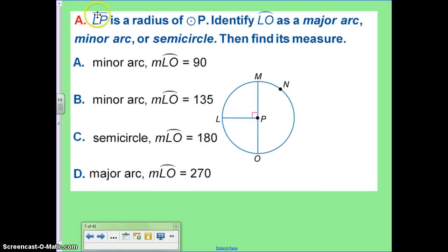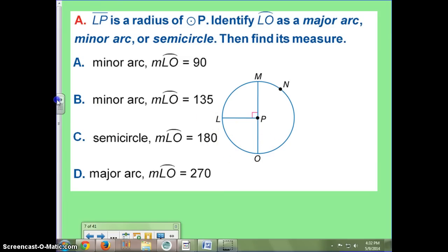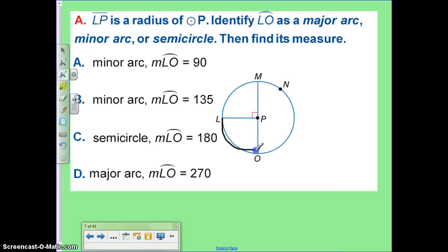If LP is the radius of circle P, identify LO as a major arc, minor arc, or semicircle, then find its measure. Well, we know that this is less than 180 degrees, so it has to be a minor arc. And since this is a semicircle, and half of the semicircle is 90 degrees, we know that the measure of arc LO is 90.